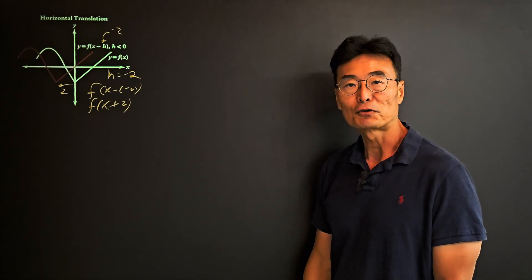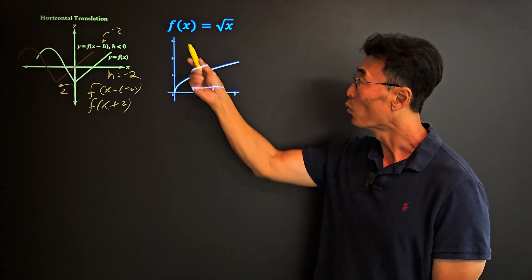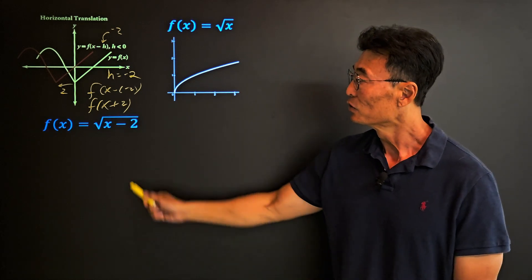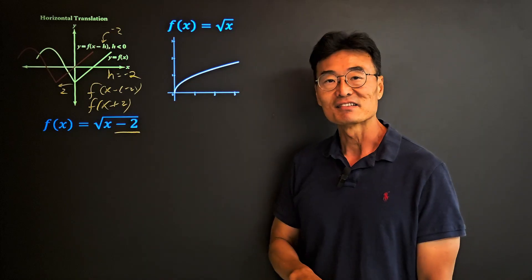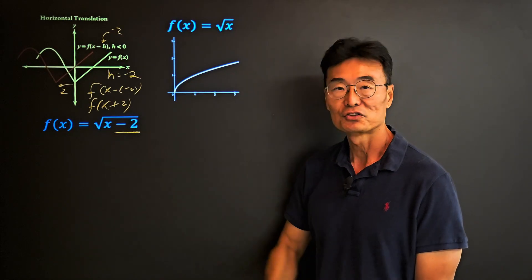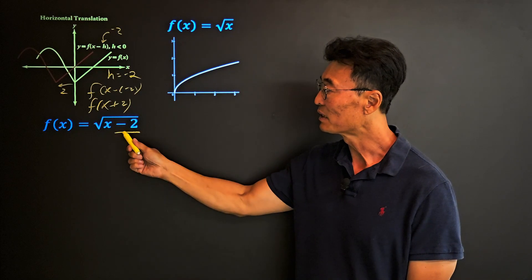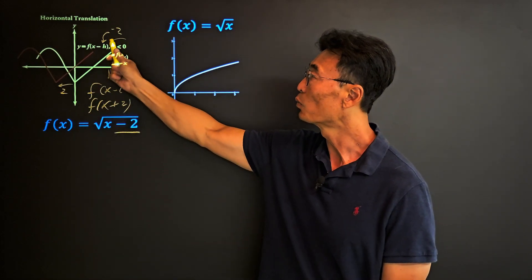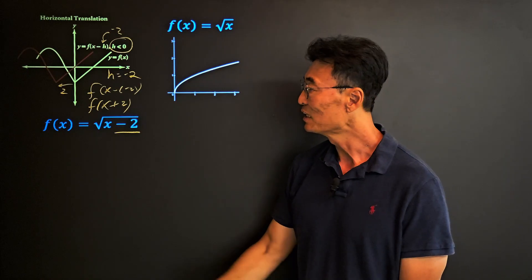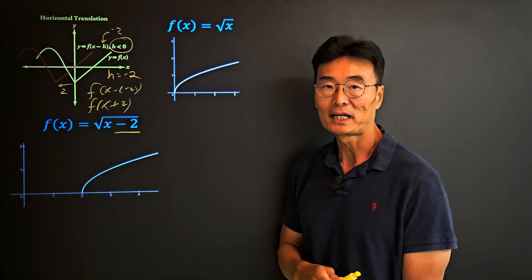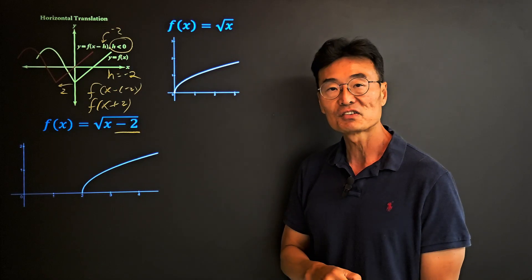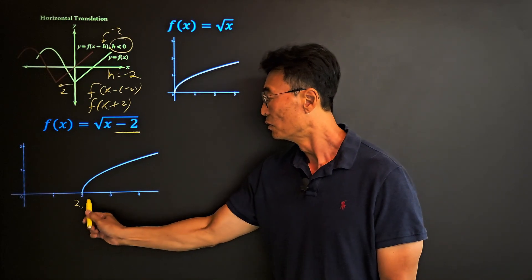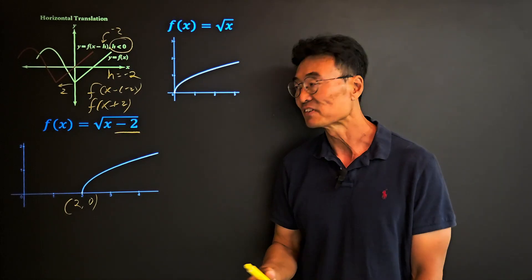Using the same parent function f(x) = √x, notice that the minus 2 is inside the square root right next to x. Many people think that because it's minus 2 you should move it to the left, but as shown, when h is negative the graph instead goes to the right two units. We started with the origin (0, 0) and now the vertex is at (2, 0).